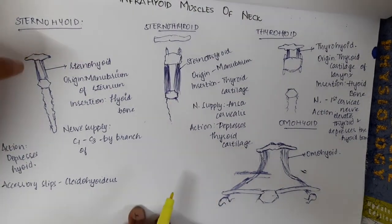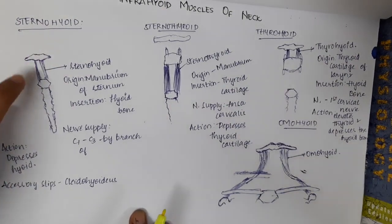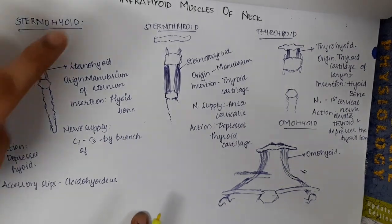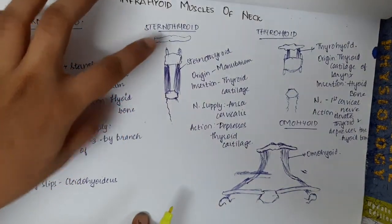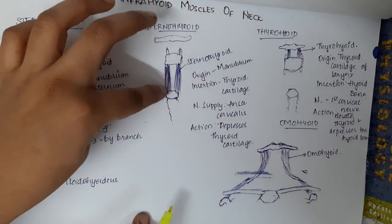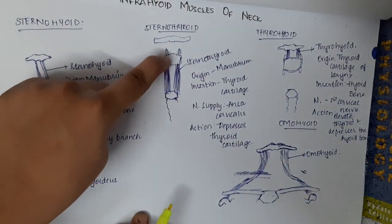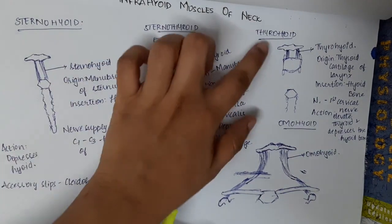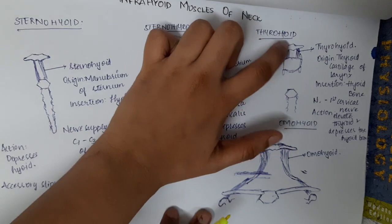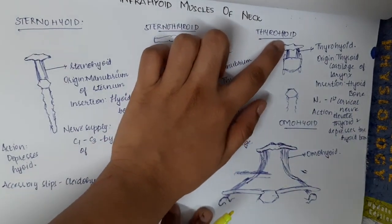Sternohyoid originates from the manubrium of the sternum to the hyoid bone. It is supplied by C1 to C3 branches. Sternothyroid is from the manubrium of the sternum to the thyroid cartilage, and is supplied by ansa cervicalis. Thyrohyoid is from the thyroid cartilage to the hyoid bone, and is supplied by the first cervical nerve.